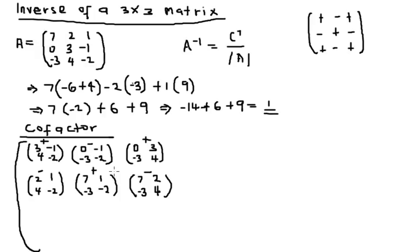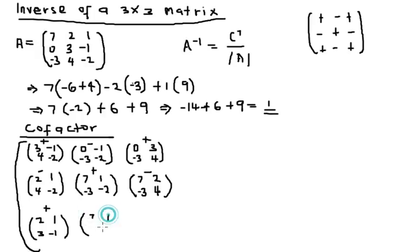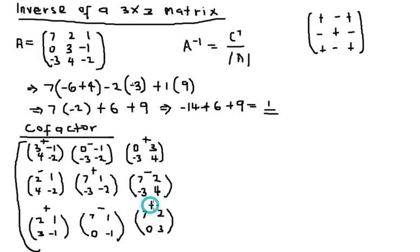Going to the third row: for the first element we eliminate the corresponding row and column and are left with 2, 1, 3, minus 1. The sign here is positive. For the middle element: 7, 1, 0, minus 1 — the sign here is negative. For the last element: 7, 2, 0, 3 — the sign here is also positive.